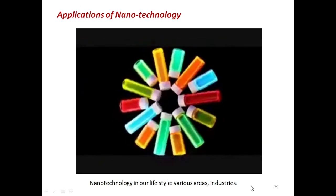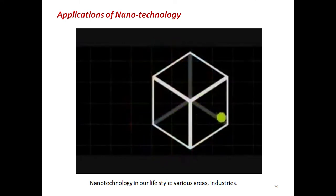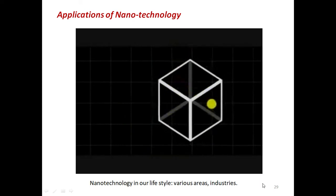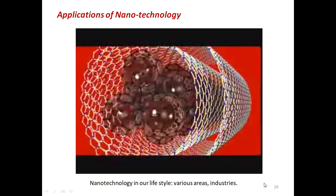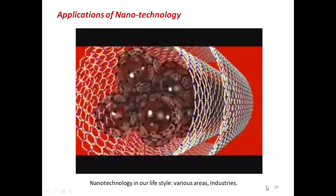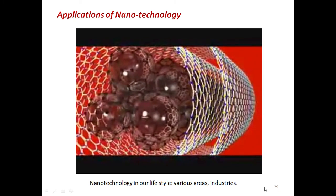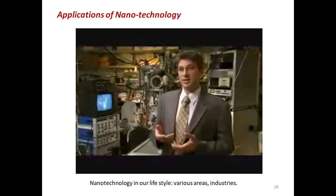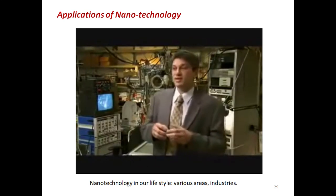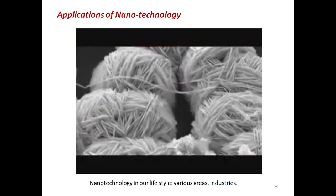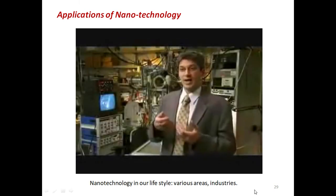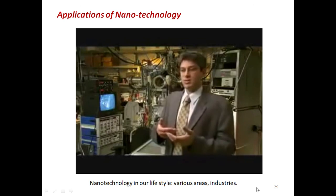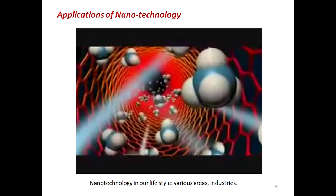Why do nanomaterials behave so strangely? The behavioral change happens when you make a material so tiny that its electrons are squeezed into a space smaller than they prefer — this is called quantum confinement. Another factor is the relationship between volume and surface area: things this small have much more outside than inside. The surface area skyrockets compared to its volume, and most of the material could be just surface. The more surface you have, the more reactions you can carry out — for example, filtering water more effectively.